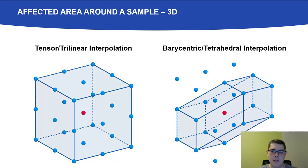Similarly, the affected space of a sample in trilinear interpolation is a cube, but with tetrahedral interpolation, the volume is half as big. This agrees with the fact that we use half as many samples for reconstruction.